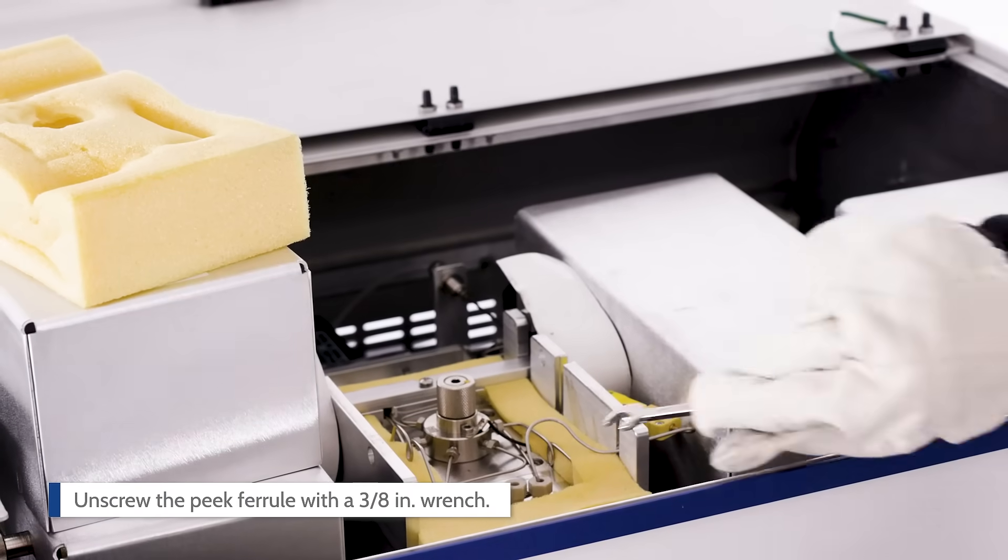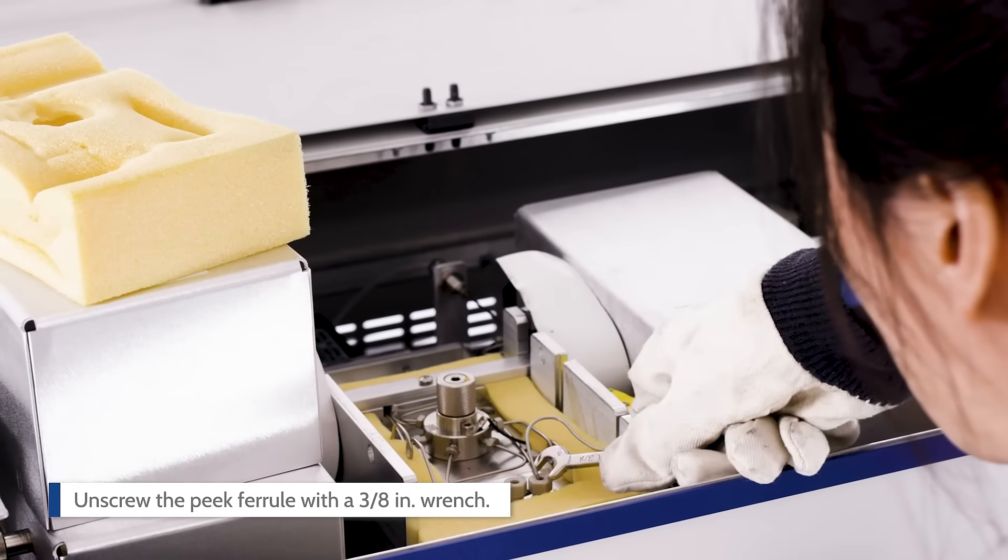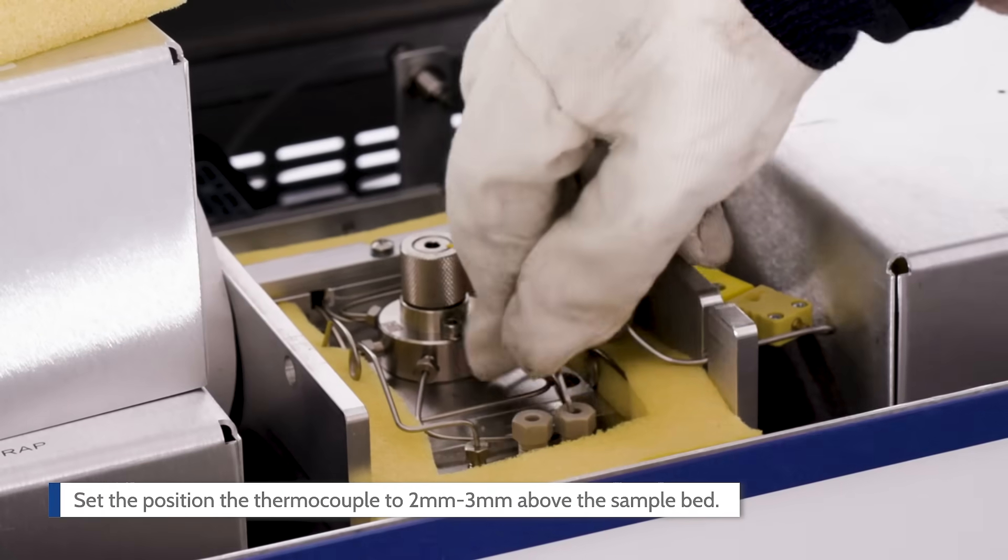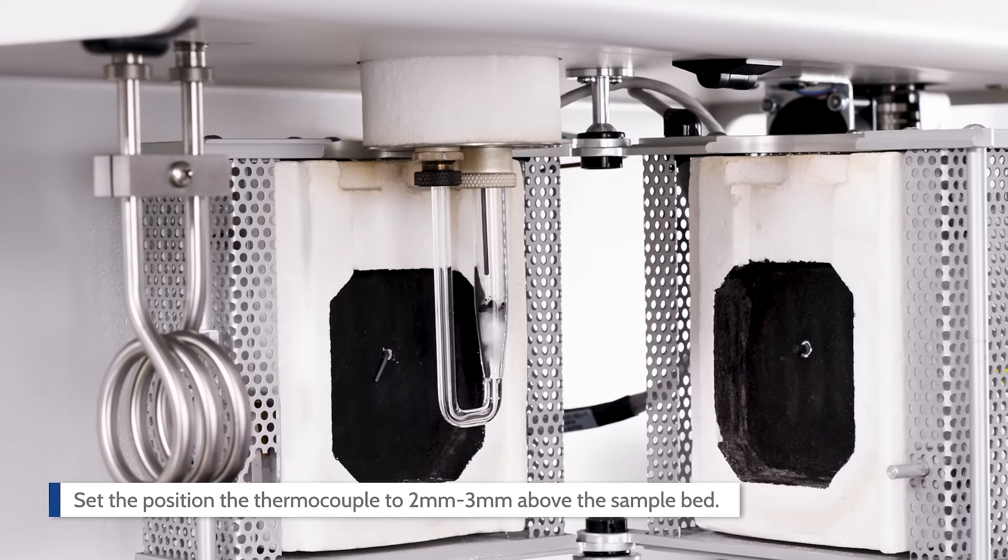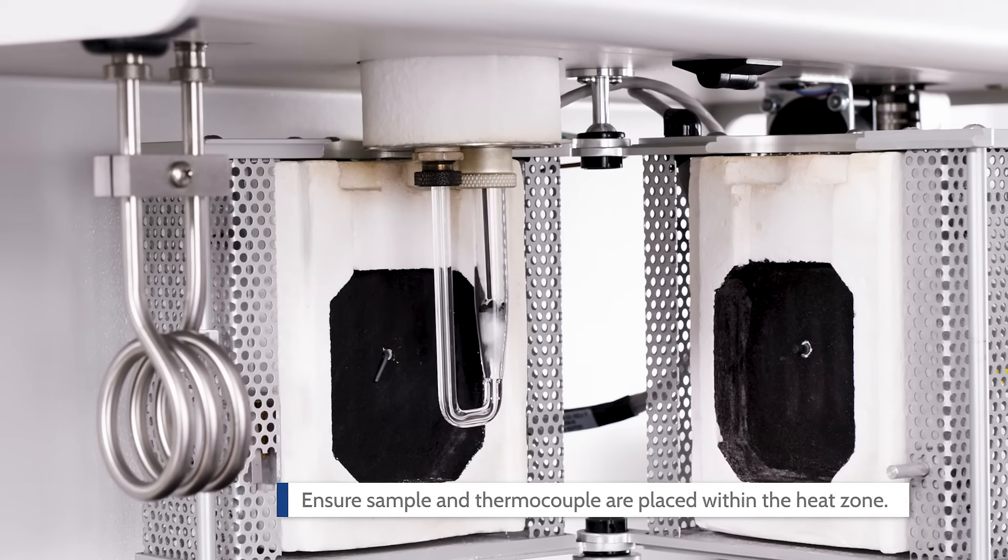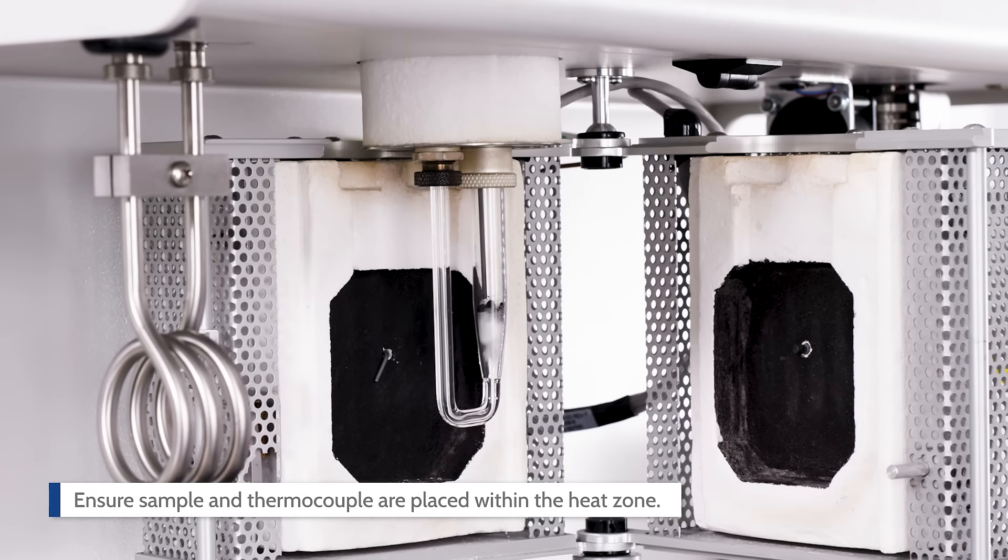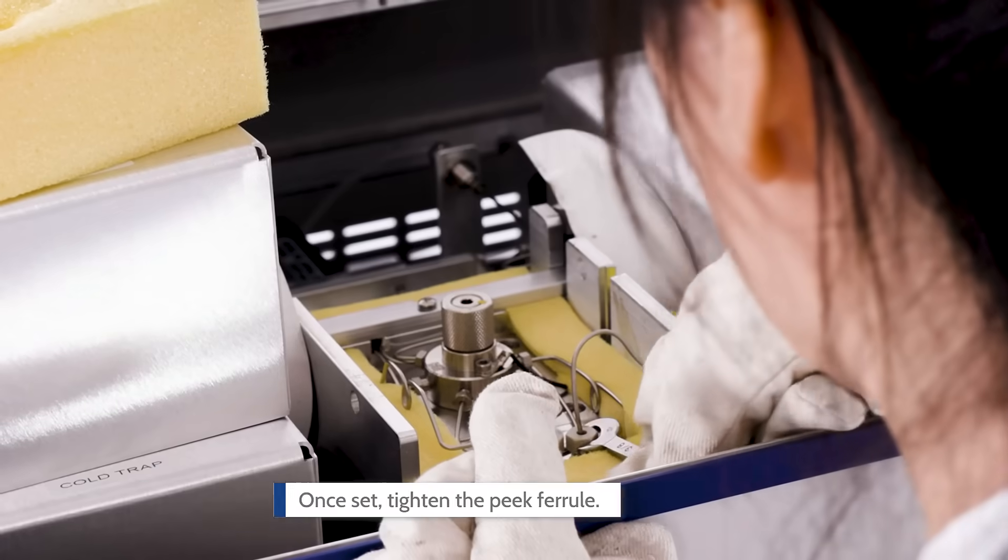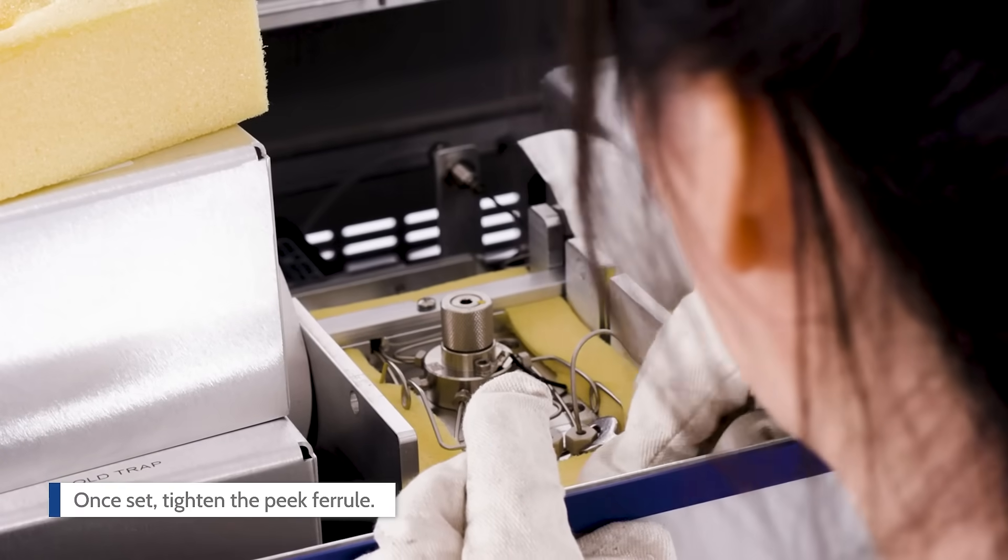Unscrew the PEEK ferrule located on the lower right with a 3/8 inch wrench. Set the position of the thermocouple to 2-3 millimeters above the sample bed. Ensure both the sample and the thermocouple are placed within the heated zone, which is the black area on the furnace. Once set, tighten the PEEK ferrule.